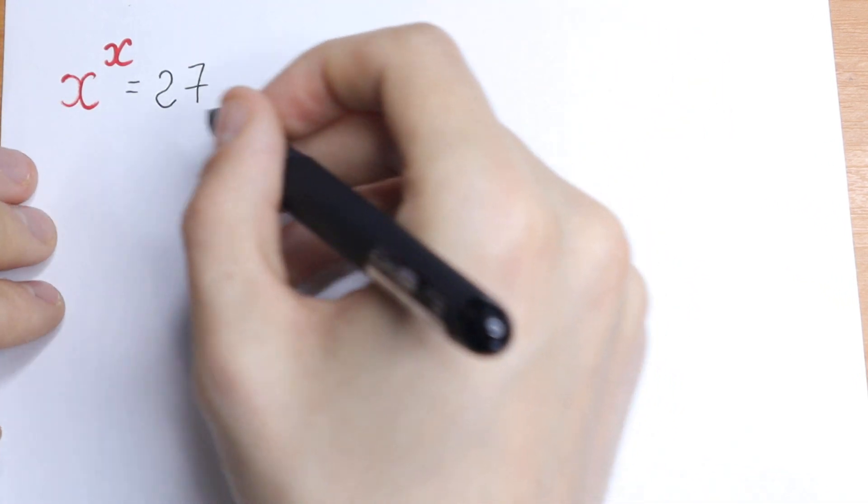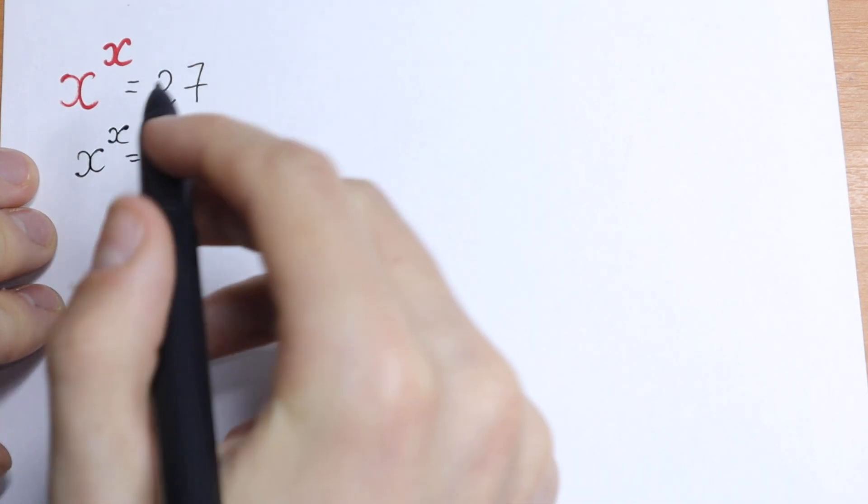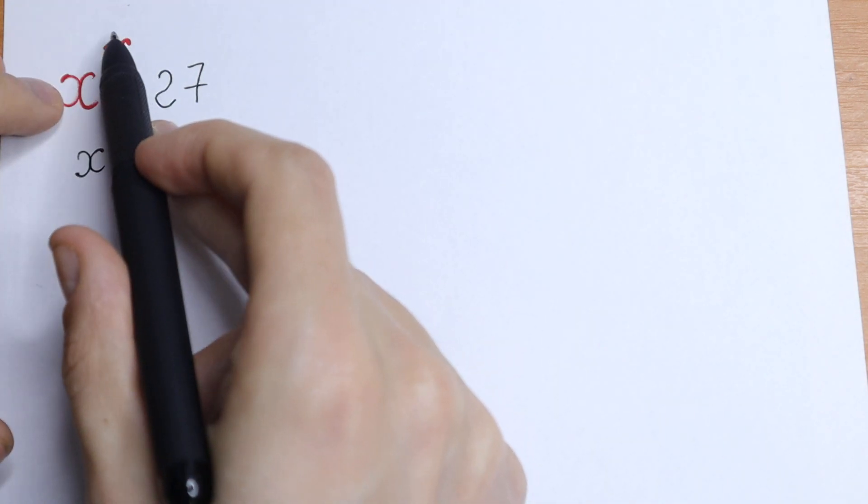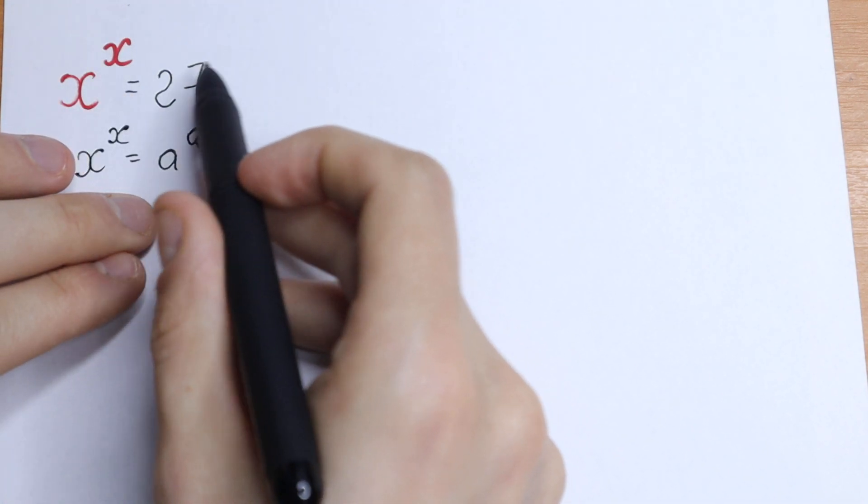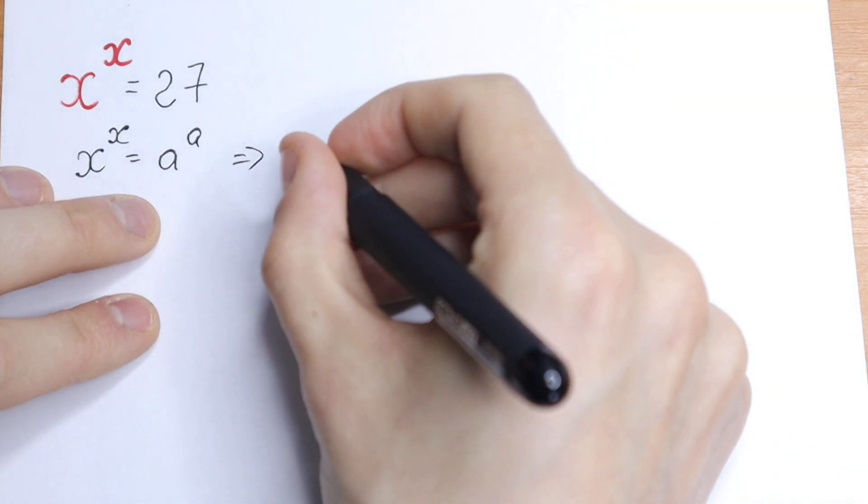If we write this equation as x to the power x equal to a to the power a, on the left we have the same base and same exponent. If we create the same pattern on the right - same base and same exponent - we can write that x equals a, because there's no other way this equation works.